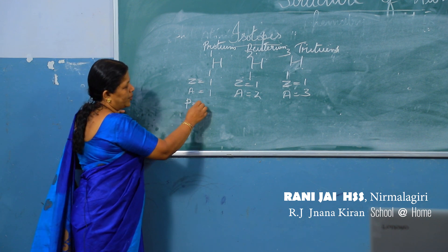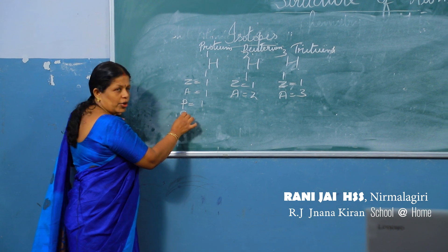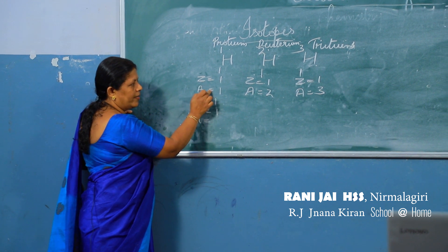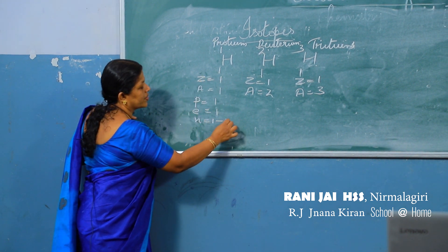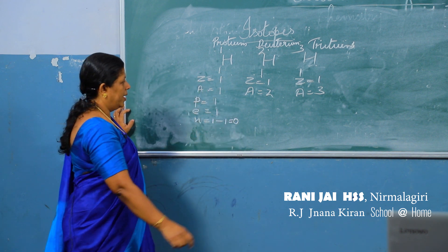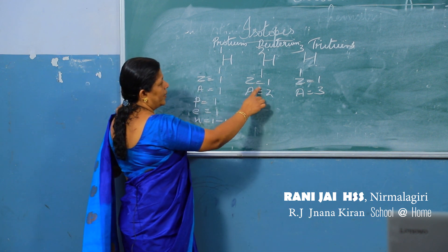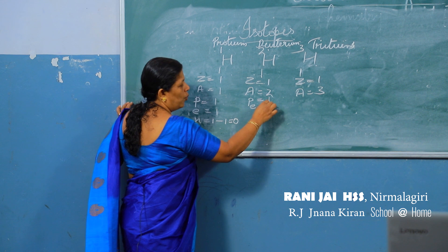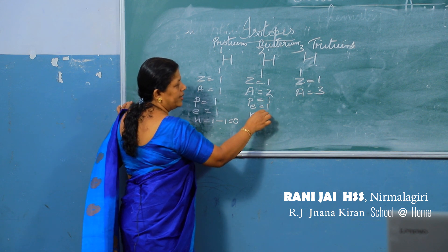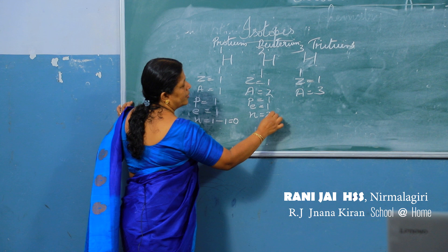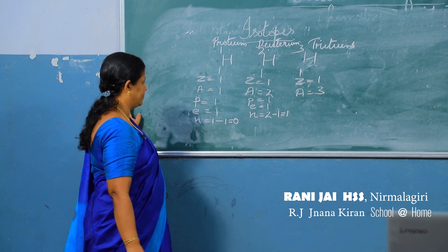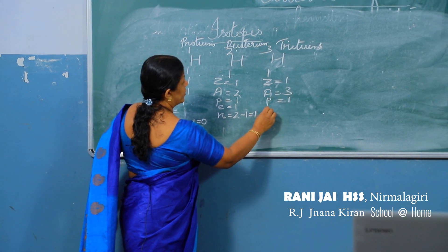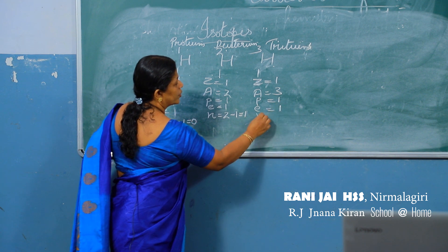Now let us see the protons, electrons, and neutrons in each. In protium: 1 proton, 1 electron, and neutrons = mass number minus atomic number = 1 minus 1 = 0. In deuterium: atomic number is 1, so protons = 1, electrons = 1, neutrons = 2 minus 1 = 1.